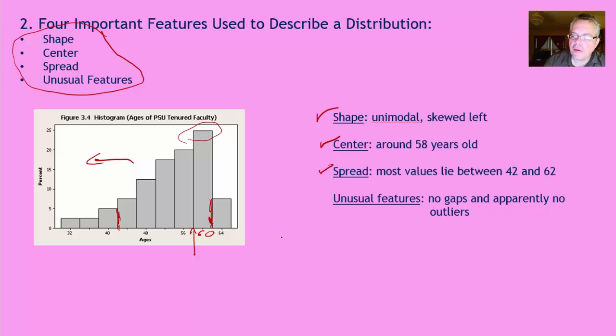All right. And finally, we want to talk about are there any gaps or outliers, especially outliers we want to mention. In this graph, I don't see any very unusual values that are off by their own. And I don't see any gaps in the data either. So there were no gaps and no outliers.